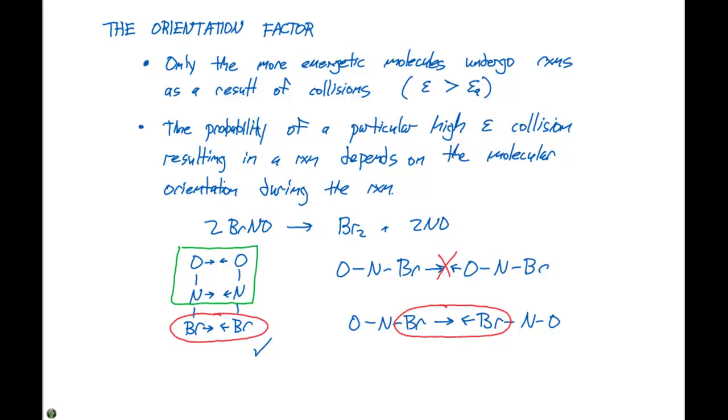So this is illustrating that the orientation will matter in a particular reaction. And there was a guy named Arrhenius who looked into both of these requirements, both the orientation factor and the collision model, to propose his theory of the rate constant.